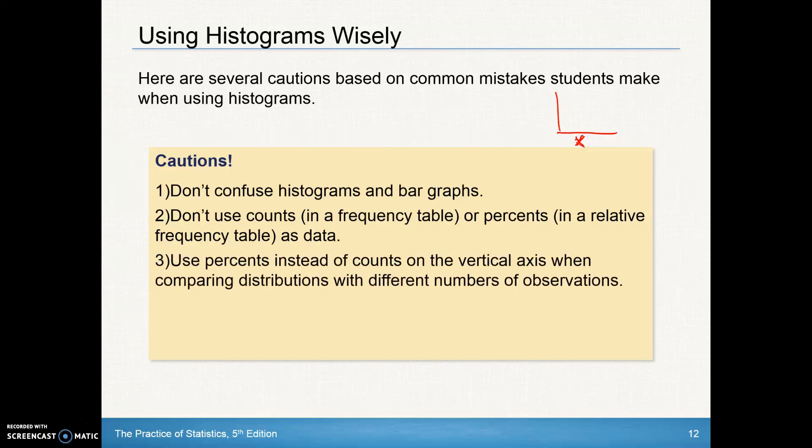Use percents instead of counts on the vertical axis when comparing distributions with different numbers of observations. I want to use percents because counts can kind of distort the data a little bit too. So when you're comparing distributions, better to compare the percents because there might be a different grand total of data that we're using.